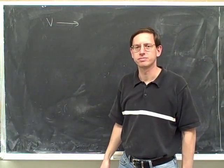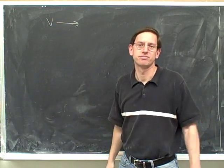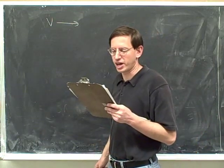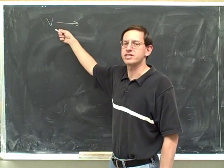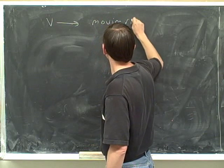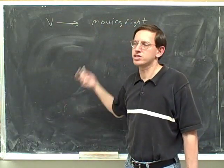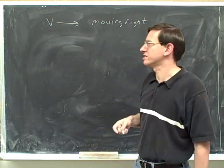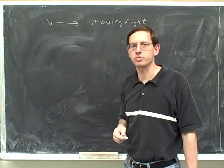Which way is this object accelerating? Trick question — we have no idea. It's impossible to tell. Which way is this object moving? All we can tell from this is that we're moving to the right. But we have no idea which way we're accelerating. Remember that which way you're accelerating has nothing to do with which way you're moving. The velocity tells us which way we're moving, but it doesn't tell us which way we're accelerating.